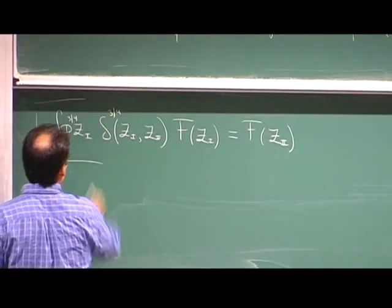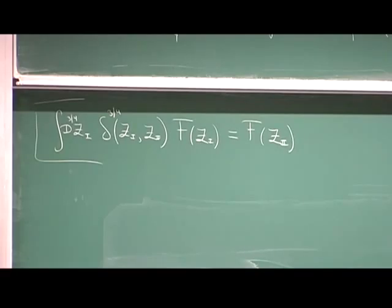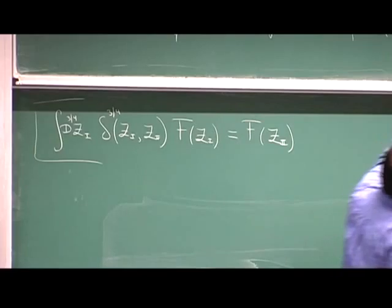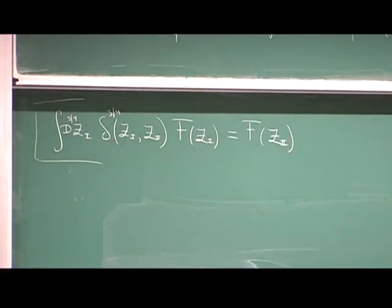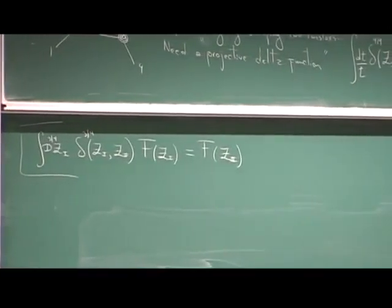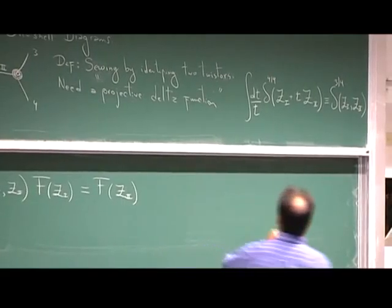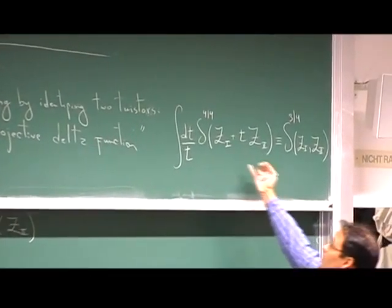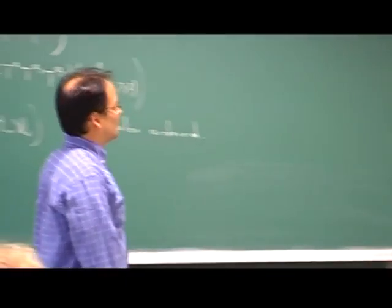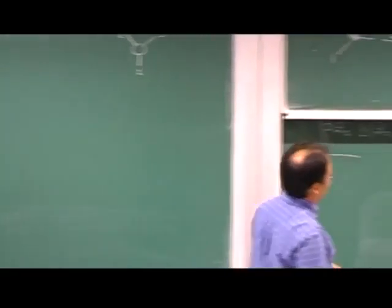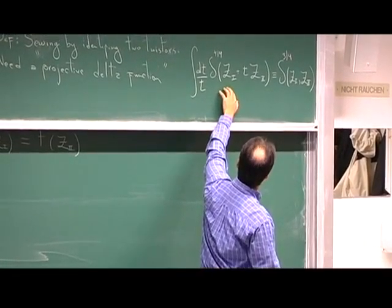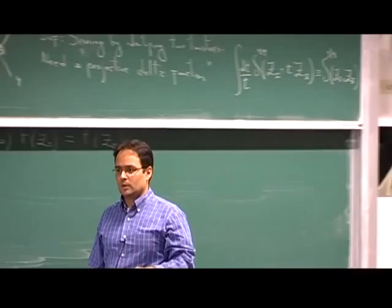Now we have all the ingredients we need to start putting together smaller diagrams and build larger diagrams. Let's give it a shot. A student asks whether T is a complex variable — yes, in general it's complex. There is a fancier way of defining this as an element of some cohomology group, but I'm not going to do it because it would take too much time. It's a physicist's delta function.